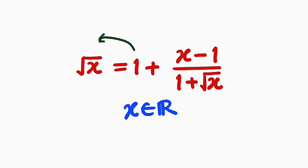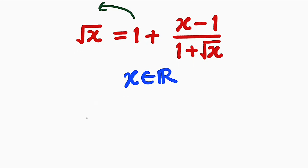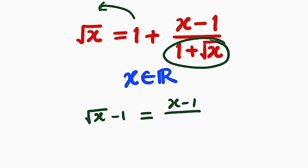First of all I would like to bring 1 to the left, which is going to transform it to negative. So we have the square root of x minus 1, and this will be equal to x minus 1 divided by square root of x plus 1, because they are all the same. 1 plus 2 is the same thing as 2 plus 1.